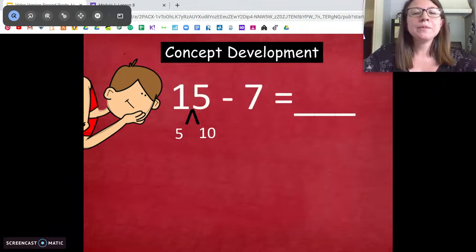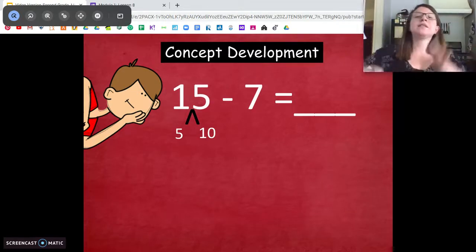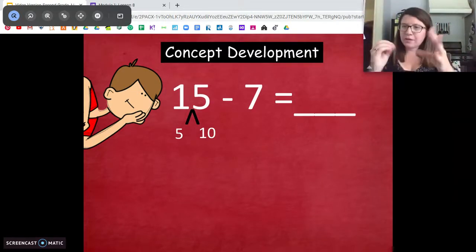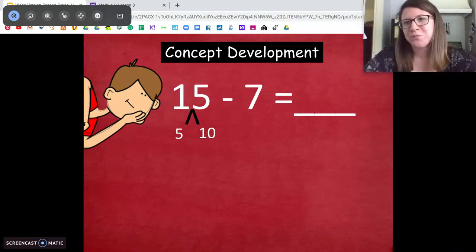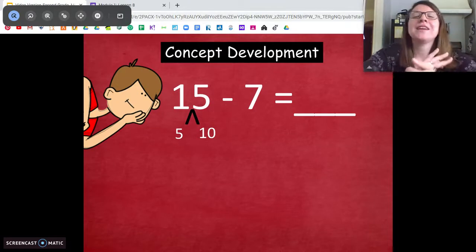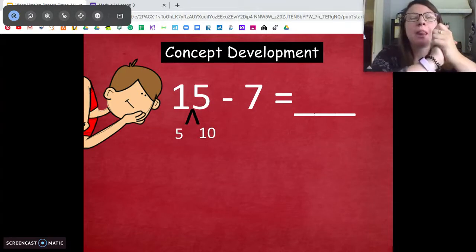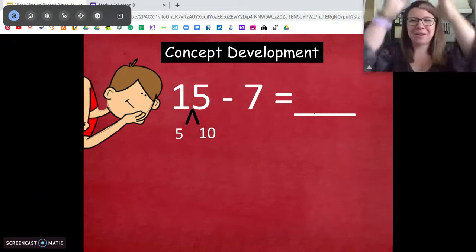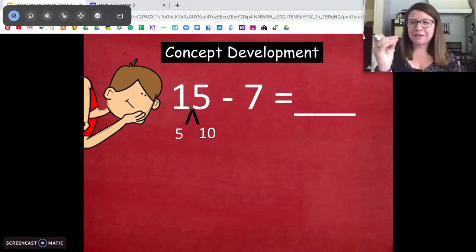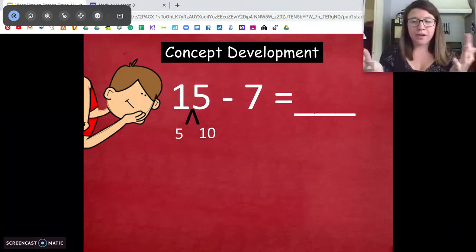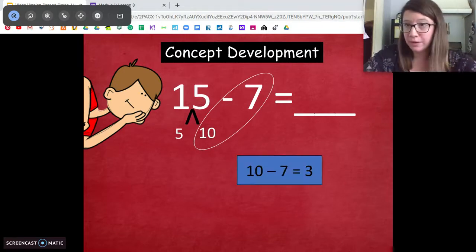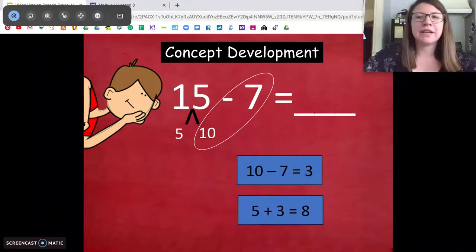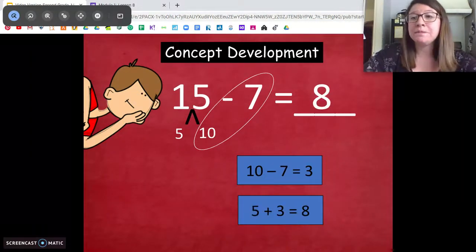All right. Let's try again. 15 minus 7. We've been doing this. Break apart the 15, take out a 10. Solve the rest on your own. Go. Ready? All right. Let's go over it. 15 minus 7. We're going to break apart 15. We took out our 10, we have 5 extra ones. We know that. Minus 7. So we're going to do 10 minus 7. We know that equals 3. Then we're going to add what? 5 plus 3 to get to 8. Good. So our answer is 8.